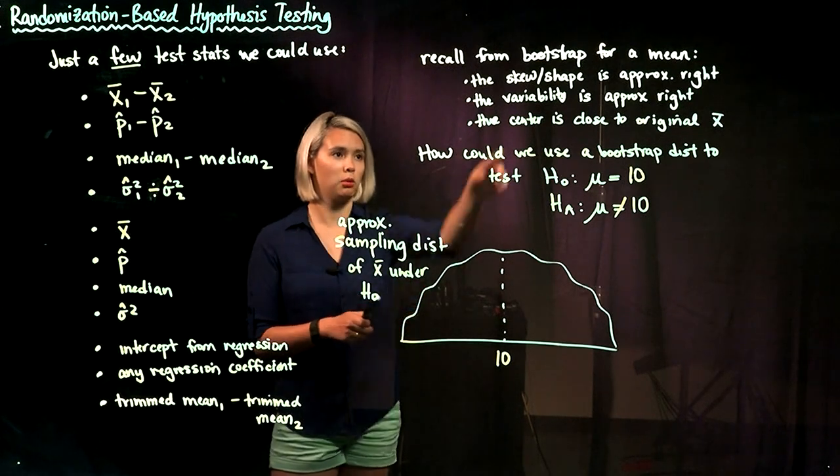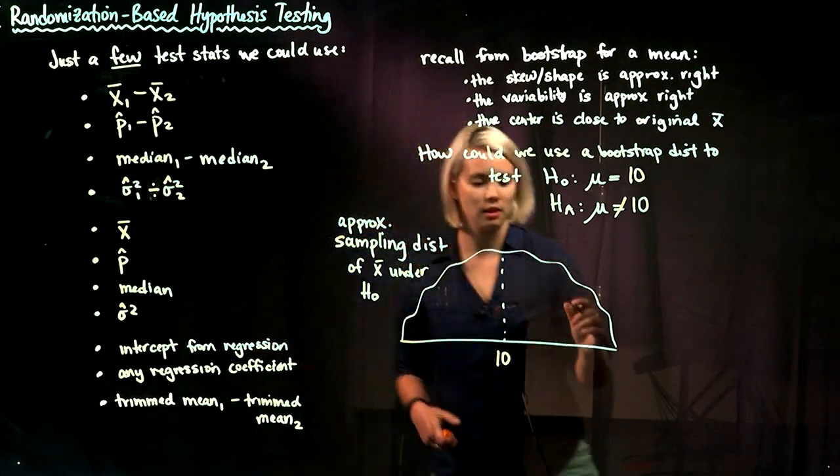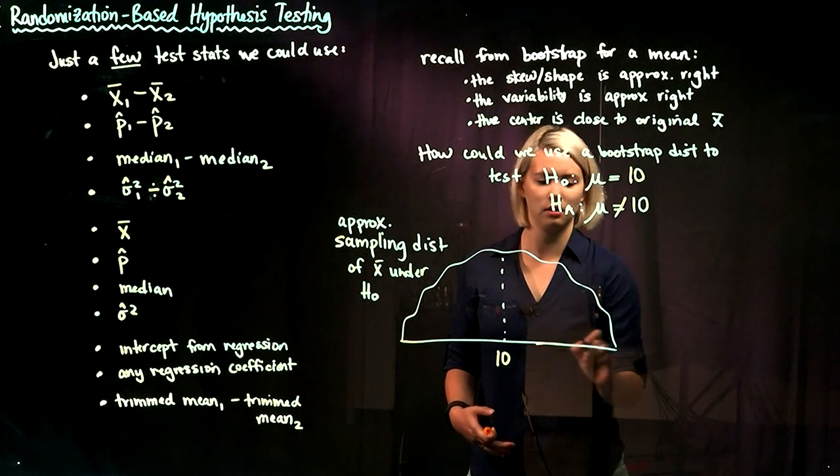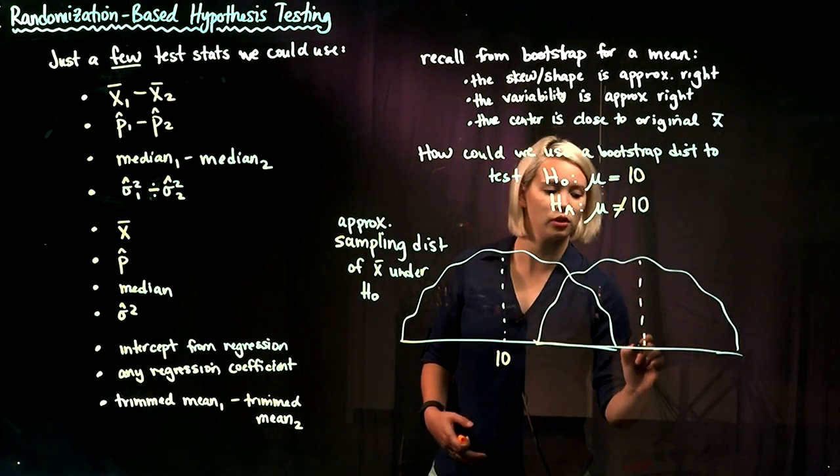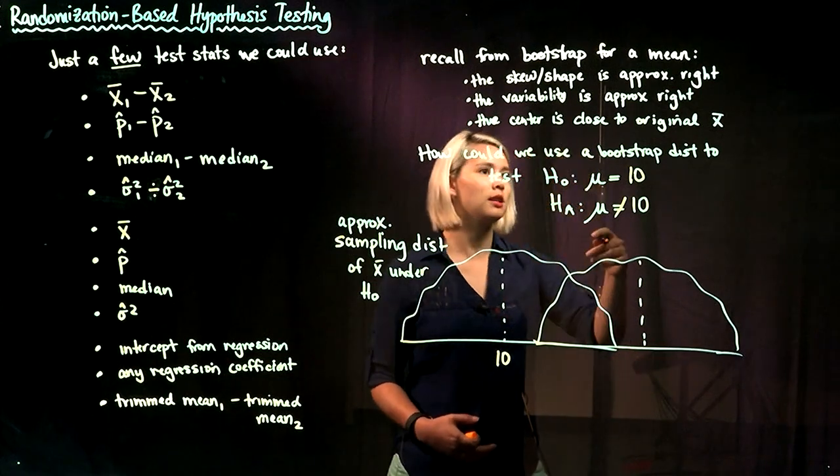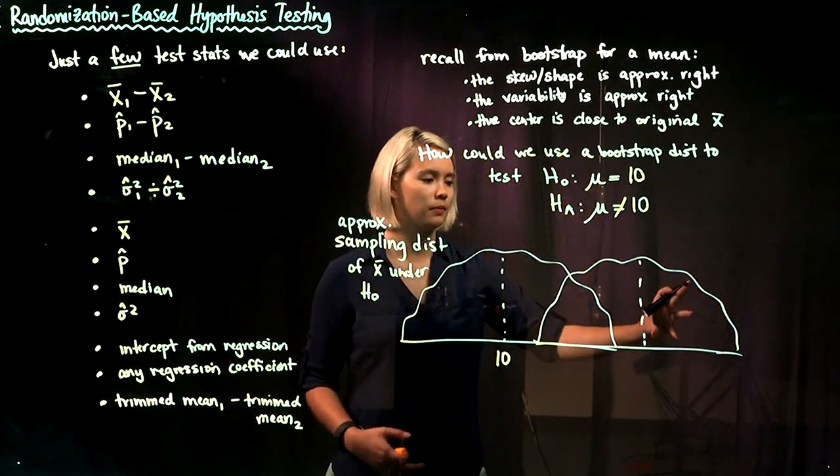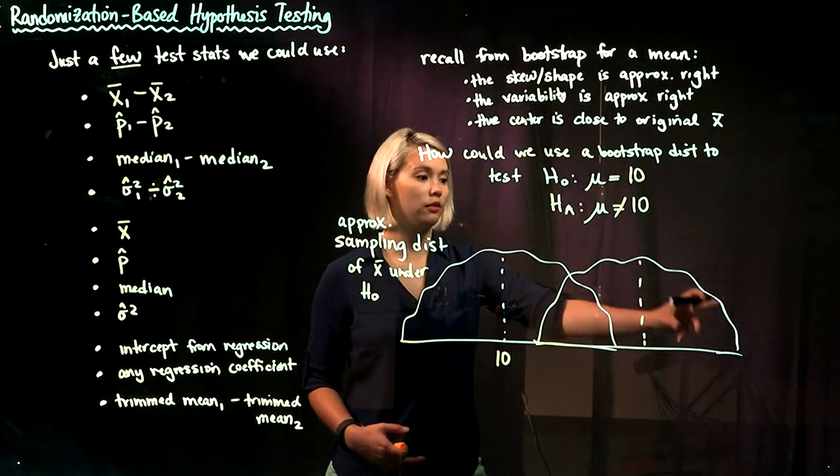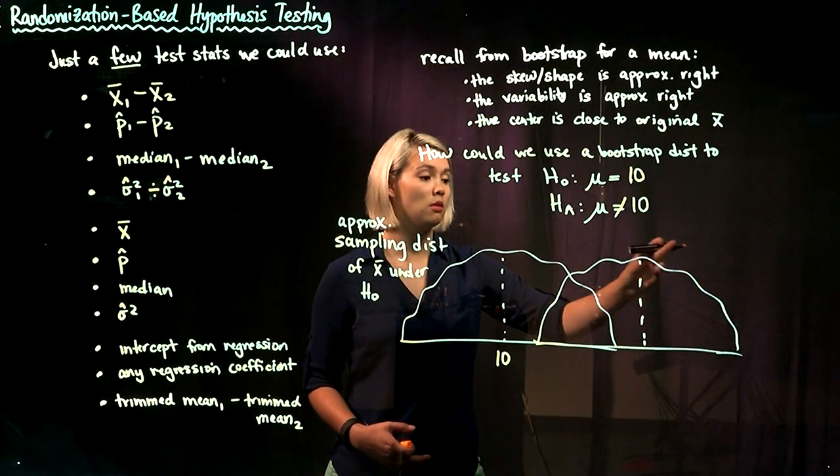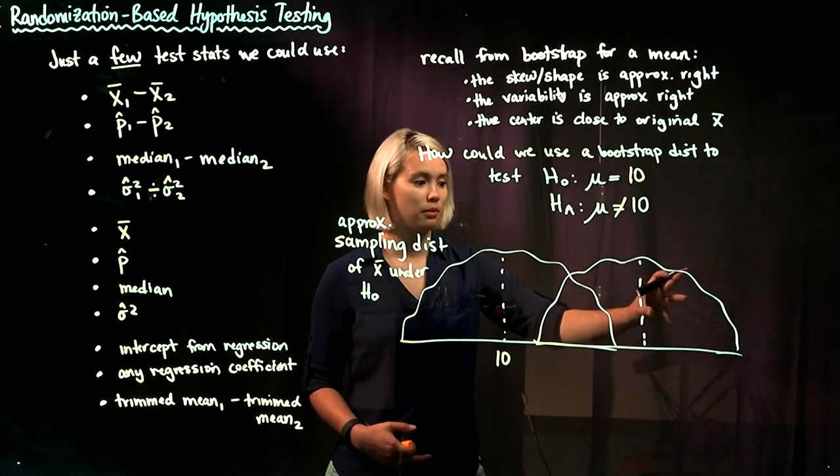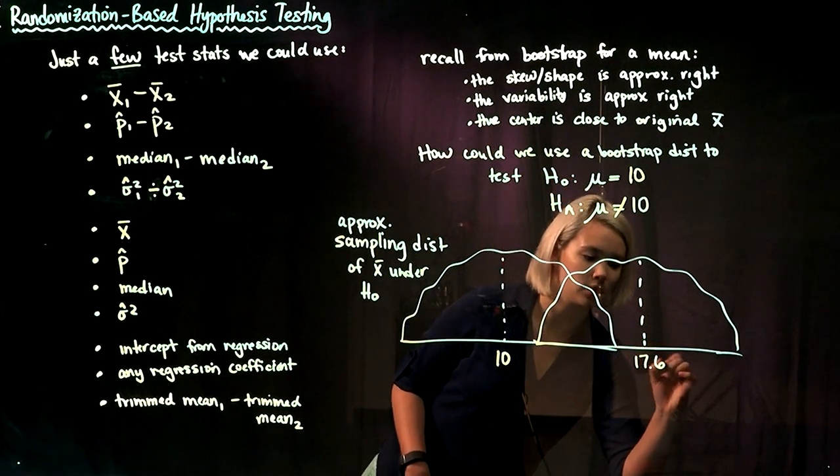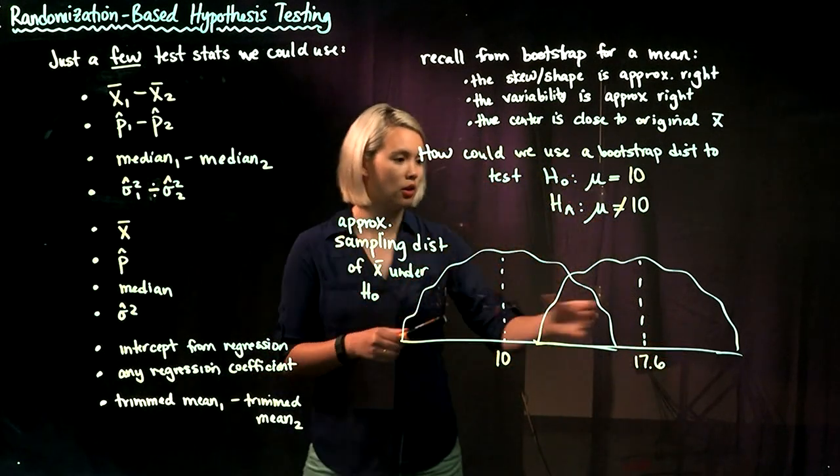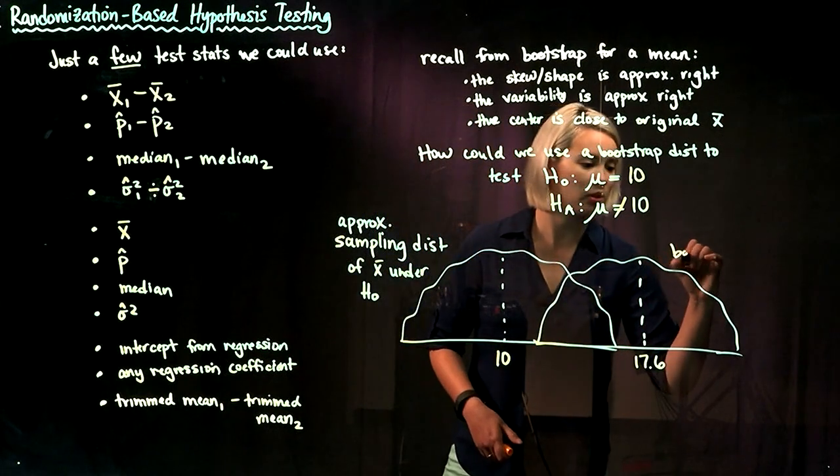But in reality, when we do a bootstrap distribution, it's not going to be centered at 10. It's going to be centered over pretty close to X bar. Say that if we calculated the mean of all of these bootstrap resamples, we get a mean of like 17.6. Here's our bootstrap distribution.